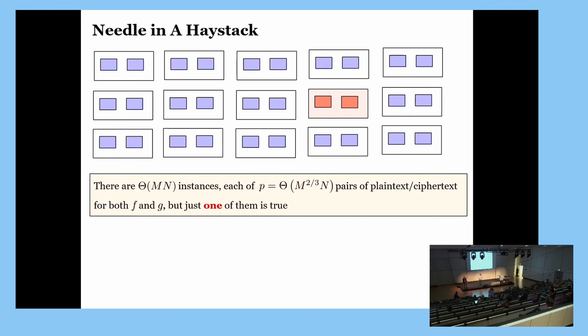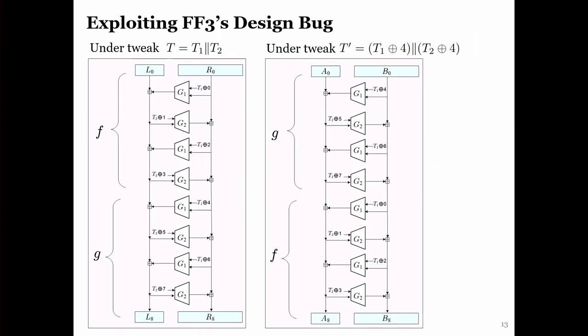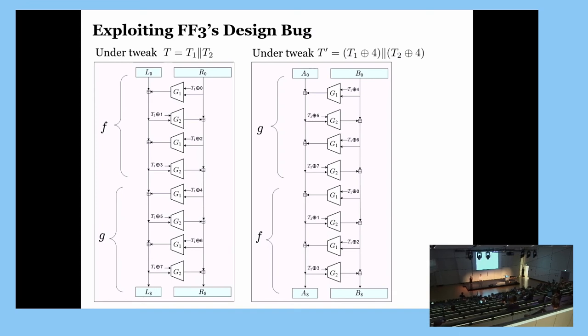There's a question over there. So, you showed that you exploit this algebraic relationship between the tweaks. So, you start with four, and then it turns out that you have a collision, which is likely. So, do you think there are other algebraic relations that could be exploited there? Or how do you know that, like, that's the only one? So, at the moment, so, NIST restricts the tweak space so that you cannot mount this attack anymore. So, at the moment, we don't know any other way to break FF3 yet. So, but I cannot, I'm not certain that it is bug-free. Yeah, so, in absence of a security proof, then we, that's just the best we can hope for. And I have to wait for further cryptanalysis.